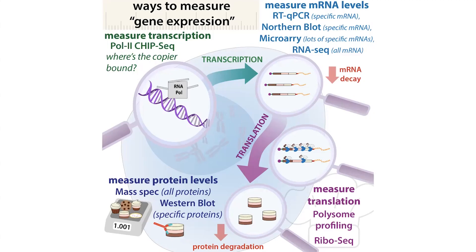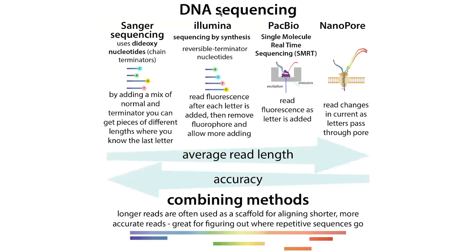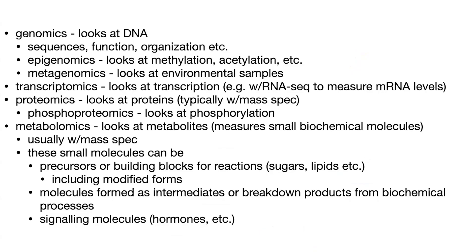So let's talk about some of the terms you might come across. First, genomics. The genome is your whole compilation of DNA — all of your chromosomes. Genomics looks at that DNA at various levels: the sequences, the function, the organization, and so on. Sequencing is often done these days by some sort of shotgun method with platforms like Illumina, PacBio, or Nanopore. Basically you now have methods where you can sequence a lot of DNA much more cheaply and easily than in the past, generating lots and lots of data.